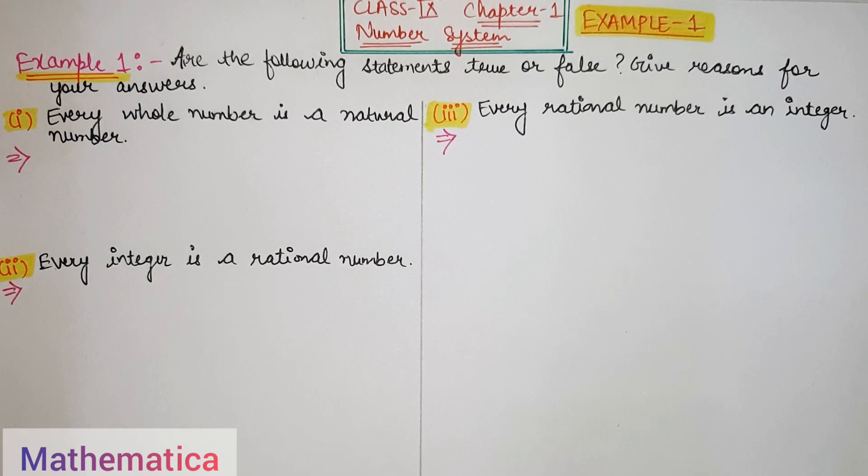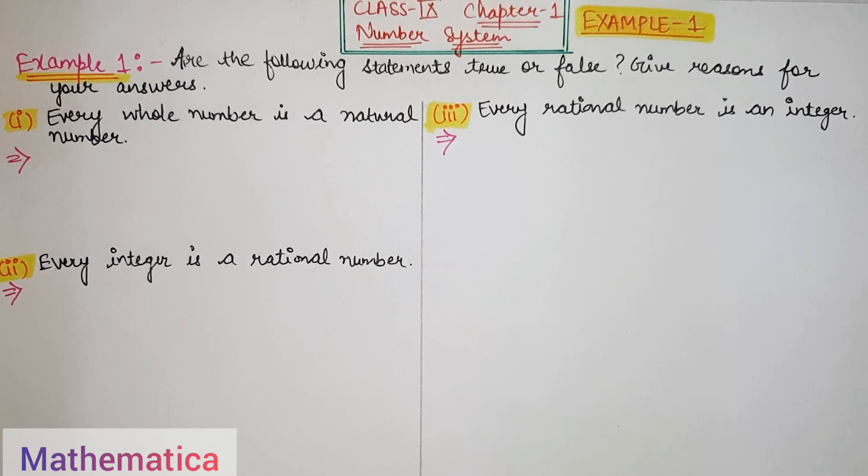The first part is every whole number is a natural number. You are asked if every whole number is a natural number. If we get one example then it is false.